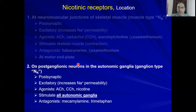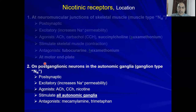The NN ganglion-type nicotinic receptor is present in all autonomic ganglia — both sympathetic and parasympathetic. The receptors are post-synaptic, and increased sodium permeability makes them excitatory. Agonists include acetylcholine, carbachol, and nicotine. Antagonist examples are mecamylamine and trimethaphan.